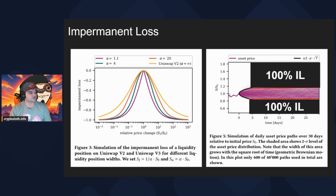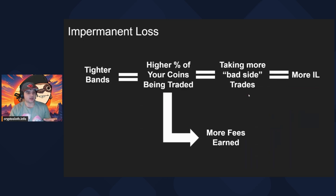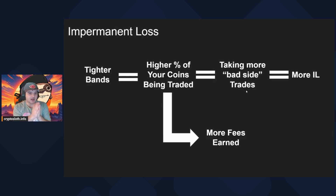Both graphs are showing essentially the same thing in different ways. The TLDR for a V3 style liquidity position: the tighter bands you have, the higher percentage of your coins are being traded, meaning you're taking more bad-side trades and experiencing more potential loss. The flip side is that you're also earning more fees, so your APRs are higher and you may be outweighing that impermanent loss.